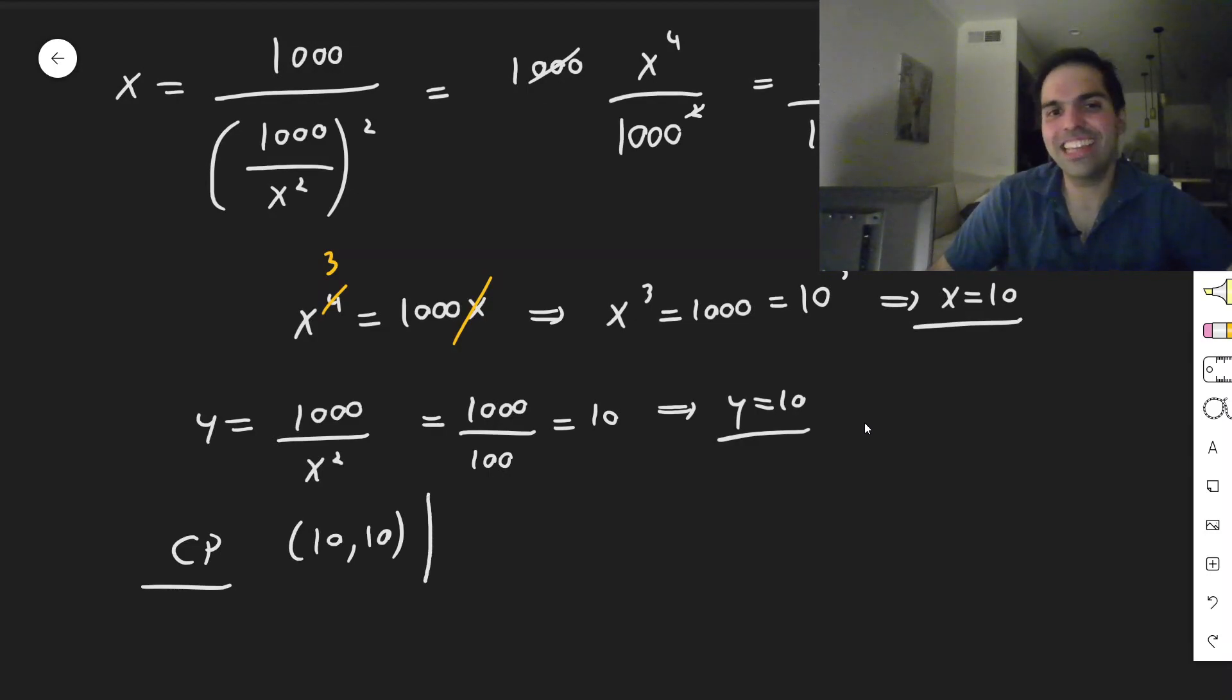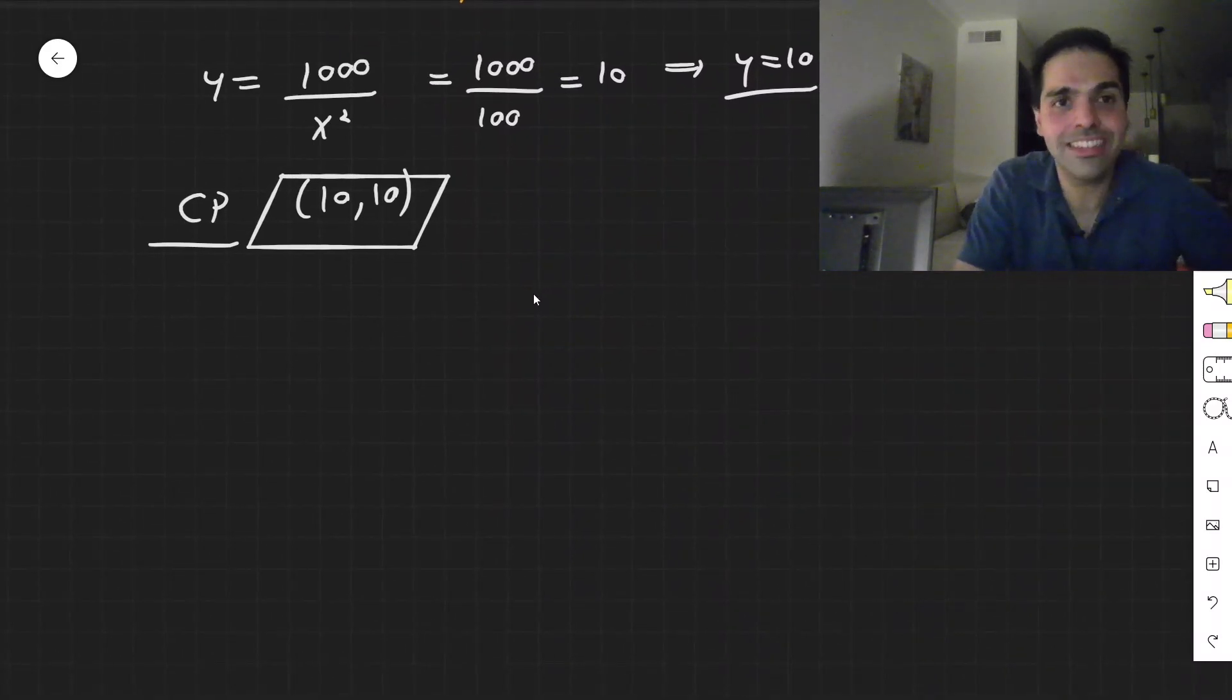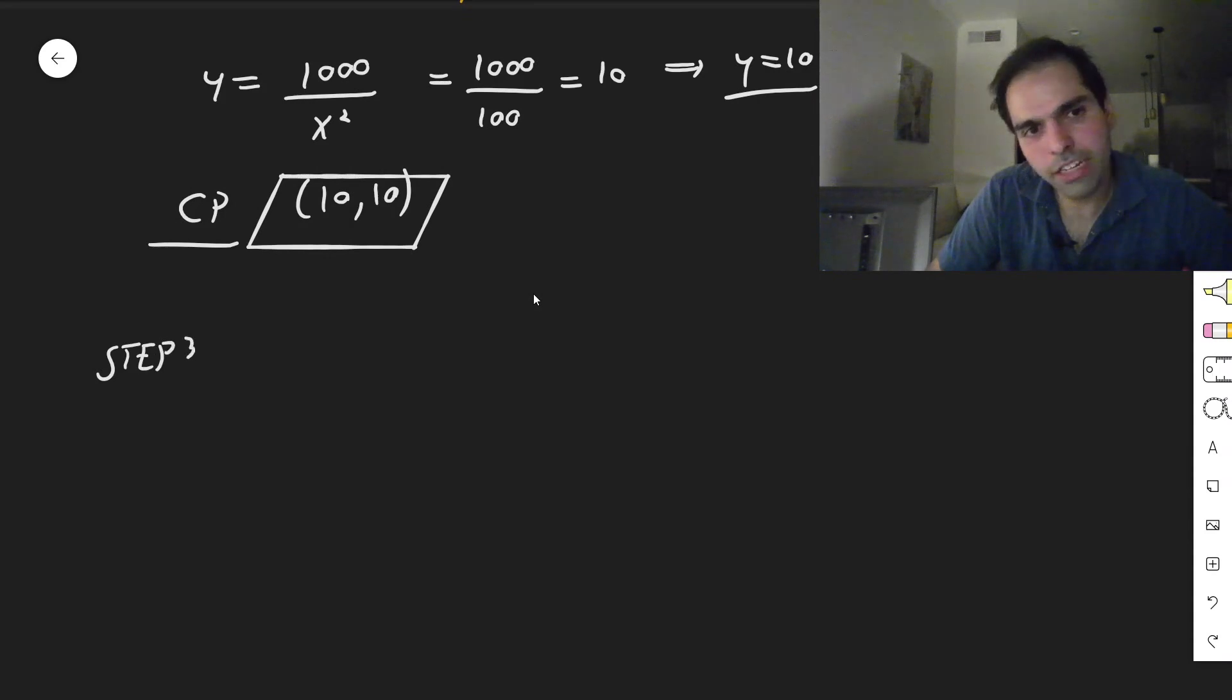And in particular, you are the perfect 10 because the critical point is 10, 10. All right. So that's one thing. And now the next step is to apply the second derivative test.